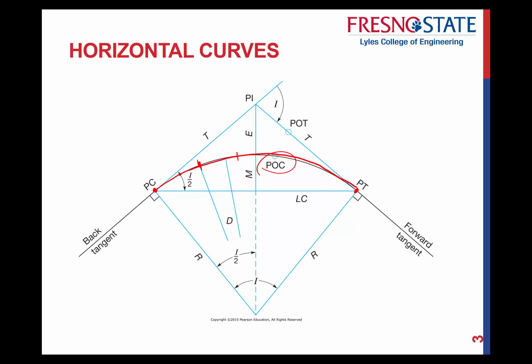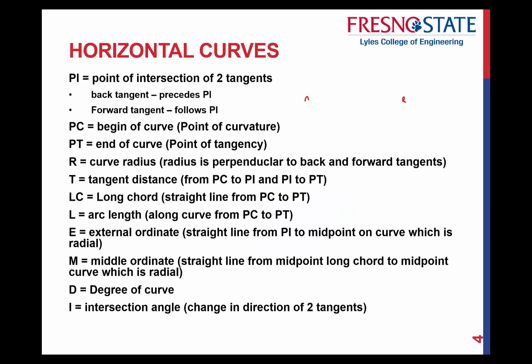Point on curve, or POC, is just any random point on the curve. POT is point on tangency — just any point on the tangent, shown here on the forward tangent. The intersection angle I is referenced here, and you can see I over 2 represents half of the subtended angle. This slide provides your general definitions for all the horizontal curve terms just covered.